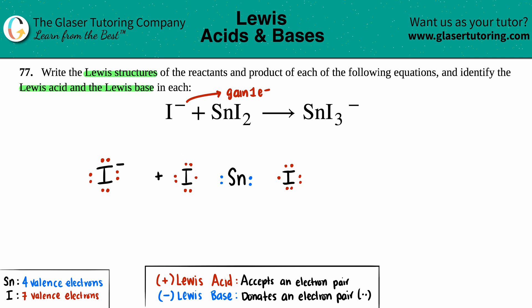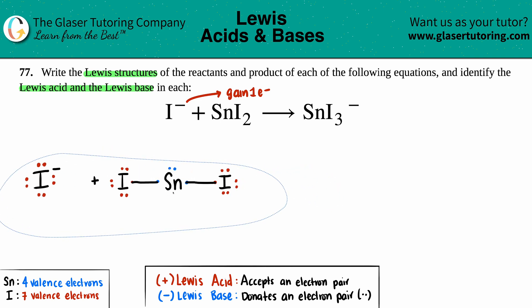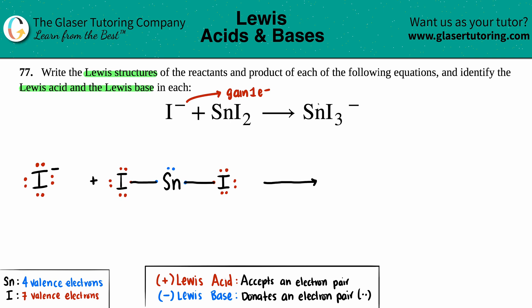Now let's combine them. It looks like one bond for each iodine — the iodines are satisfied. That means the tin is also fully bonded. SnI₂ is good to go.